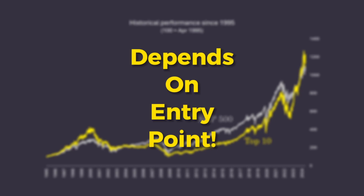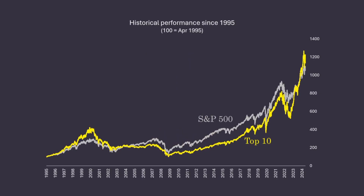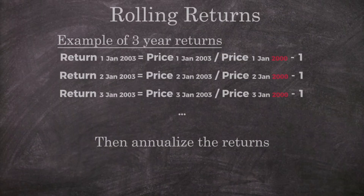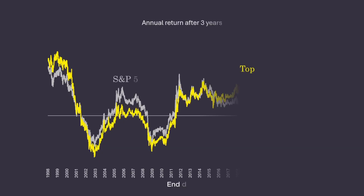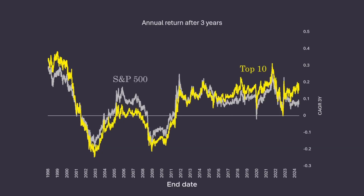But just looking at the point-to-point return of these two time series doesn't really tell you that much, since results would have been different if we started the analysis at different points. So instead, we should look at so-called rolling returns. Rolling returns means that every day in our backtest, we measure the return after, let's say, three years. This plot shows you the annualized return three years after your initial investment for both the top 10 and the S&P 500.